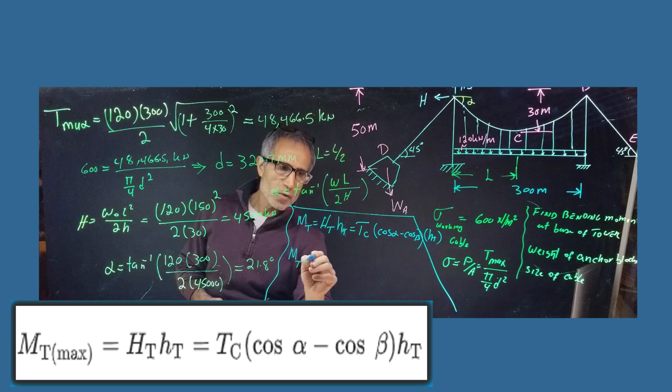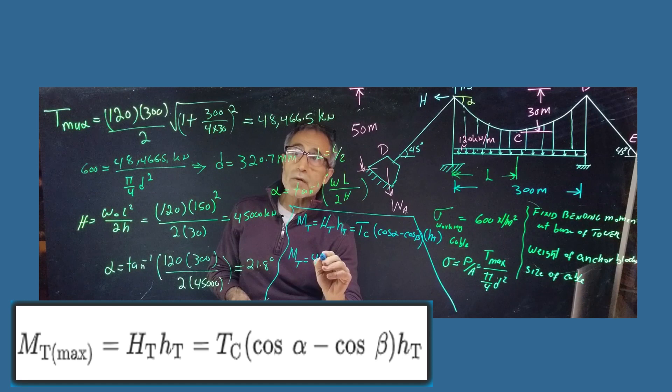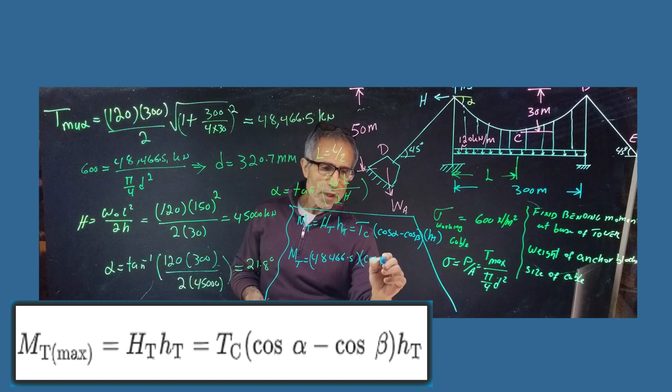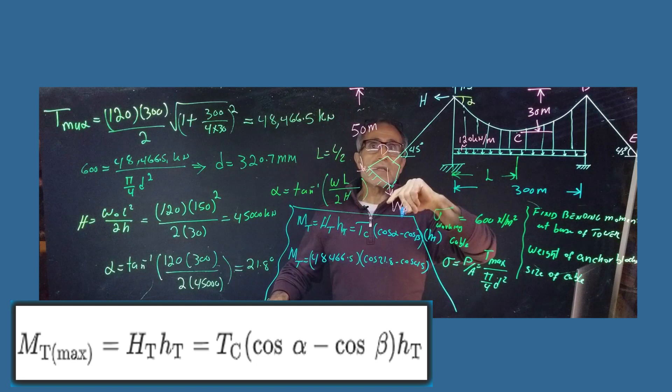And this is a cosine beta, which is 45. And multiply that whole thing by HT. So now I'm going to have the moment. We're going to come out to TC. TC came out to, what do we have for TC? 48, I believe it was. 48.